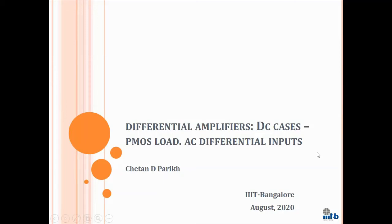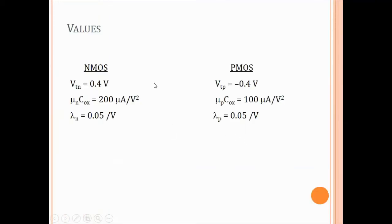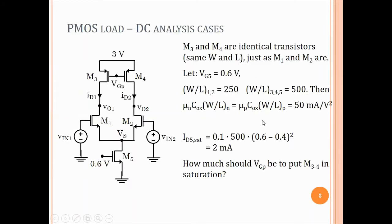In this lecture we continue with differential amplifiers and look at a differential amplifier with a pMOS load. Last time we looked at the amplifier with a resistive load. We'll look at both DC cases and AC differential cases. This is our differential amplifier — now we have two pMOS transistors, M3 and M4, instead of two resistors as the load. We assume M3 and M4 are identical, with the same W/L, just as M1 and M2 are identical. For our calculations, let us make VG5 equal to 0.6 volts.